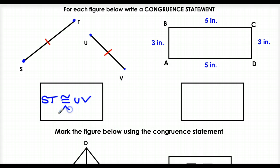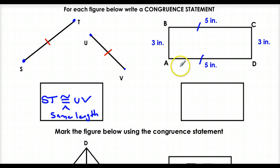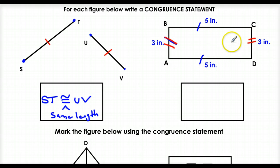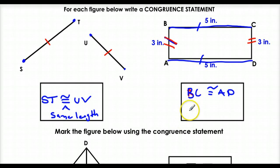In this next example we actually know the lengths. We know BC and AD are the same length, so they're congruent — we put single marks on them. We also know BA is congruent to CD, so we put double marks on those. The congruent statements are: BC is congruent to AD, and BA is congruent to CD. Now going the opposite direction — given congruent statements, we mark the figure. Since AB is congruent to BC, we put one mark on each. Since AD is congruent to DC, we put two marks on each.